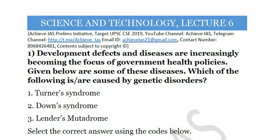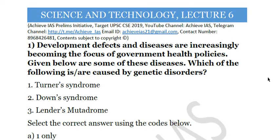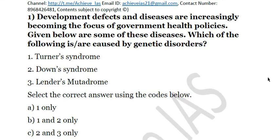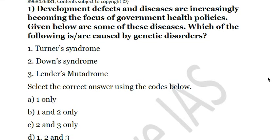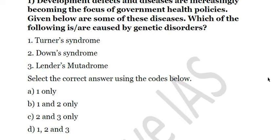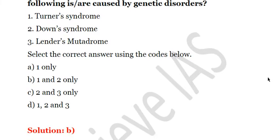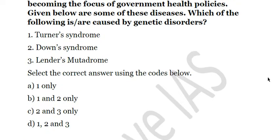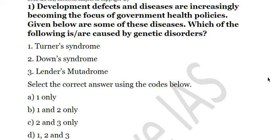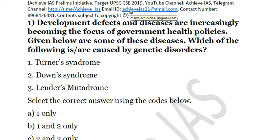Today we will be covering lecture number 6 of Science and Technology. The first question: development defects and diseases are increasingly becoming the focus of government health policies. Given below are some diseases — which of the following is/are caused by genetic disorders? First, Turner's Syndrome; second, Down's Syndrome; third, Landers Syndrome. The answer is 1 and 2 only — solution is B. You can contact us at gys21@gmail.com or at 8968-426481 for explanation PDFs.